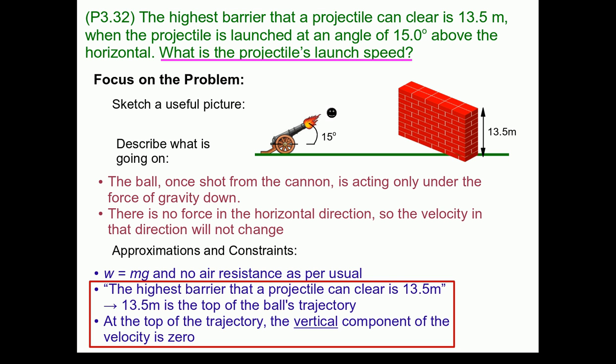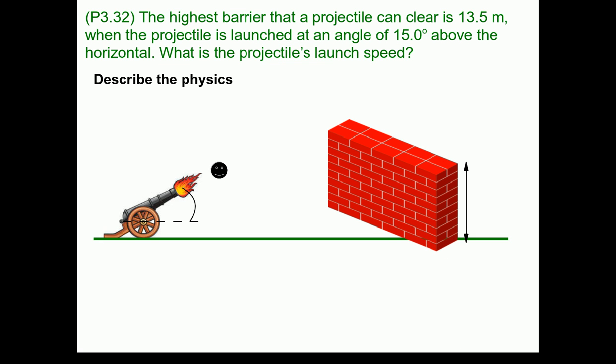The question we're looking to answer is, what is the projectile's initial launch speed? So now that we've focused on the problem, let's begin describing the physics by adding a coordinate system. I'm going to pick a rather typical coordinate system, with x running along the ground, and y running vertically.